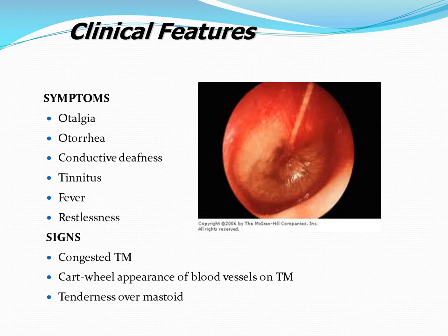Symptoms: the patient presents with otalgia — unbearable pain causing them to wake up at night — and anorexia. If the tympanic membrane perforates, there will be ear discharge and the pain reduces. There is conductive deafness. With pus accumulation, the patient feels drumbeat tinnitus and hearing loss. Systemic symptoms include fever and restlessness. Main symptoms are earache, fever, and ear discharge if perforated.